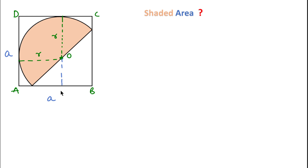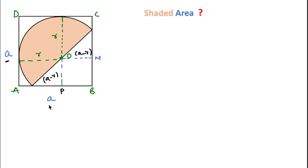If I extend a horizontal line from O to the side AD and call that point P, then since OP is parallel to AD and AD equals 'a' units, OP equals 'a' units. Since O to the arc is r, the remaining length PB equals a minus r. Similarly, extending a vertical line from O gives OM, which also equals a minus r, since that line is parallel to AB and equals 'a' units.